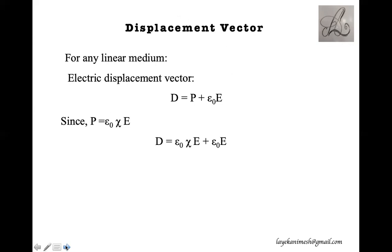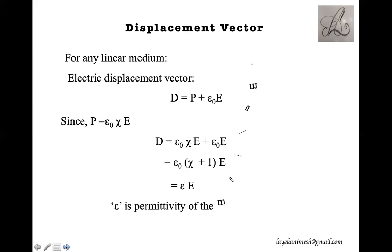In terms of susceptibility, the displacement vector can be expressed as D equals epsilon naught chi E plus epsilon naught E. Factoring out epsilon naught gives epsilon naught times (chi plus 1) times E, which can also be written as epsilon naught epsilon times E. This epsilon is the total or effective permittivity of the medium. So for any medium, the relation between susceptibility and permittivity is: epsilon equals epsilon naught times (chi plus 1), where epsilon naught is the permittivity of free space.